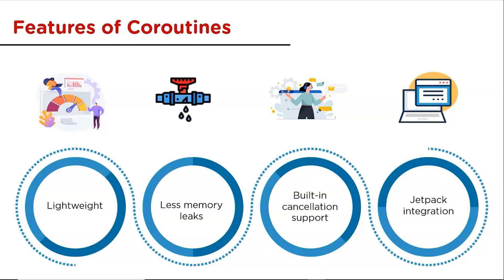The second feature is fewer memory leaks, because Kotlin coroutines follow structured concurrency. Structured concurrency means a new coroutine can only be launched in a particular coroutine scope, which sets the lifetime of the coroutine. During implementation, a large number of coroutines can be launched, and structured concurrency ensures they are not lost or leaked.